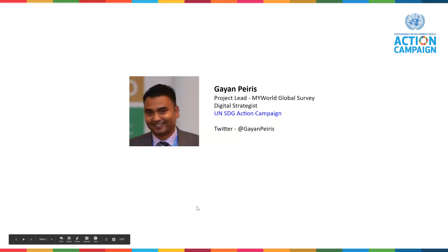My name is Gayan Peris. I'm the project lead for the My World Global Survey, and I'm also the digital strategist of the campaign. If you have any questions about My World, or if you need any advice about anything digital, I'm available always. My Twitter is @GayanPeris — you can find me on Twitter, and I think some of you already saw me on your Facebook group. Feel free to get in touch with me if you need any advice.